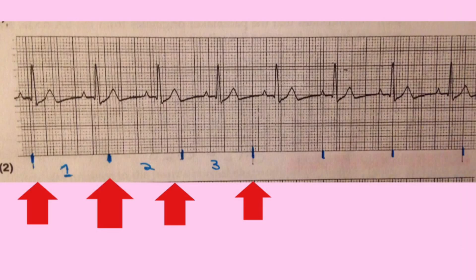You will see short vertical markers spaced three seconds apart on an EKG strip. One second equals five large boxes, so three seconds equals 15 large boxes or 75 small squares. This is important to understand because we use six-second rhythm strips very often for interpretation.